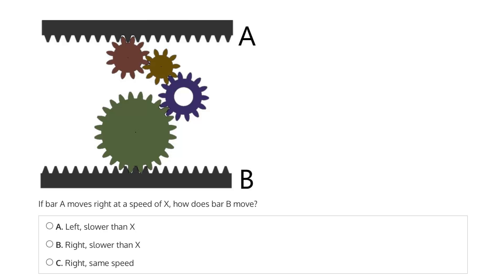The question says, if bar A moves to the right at a speed of X, how does bar B move? Is it A, left and slower than X; B, right and slower than X; or C, right at the same speed?